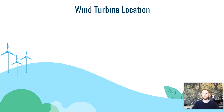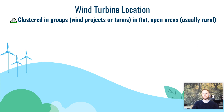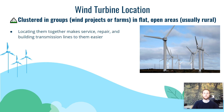Wind turbines are typically clustered together in what we call wind farms or wind projects, often located in rural areas. This centralizes the maintenance needed to uphold these electricity-producing turbines and allows more efficient modes of transporting that energy. These are called transmission lines — large wires that carry electricity to a population center where it will be used. Clustering turbines, especially in rural areas, makes this more efficient.